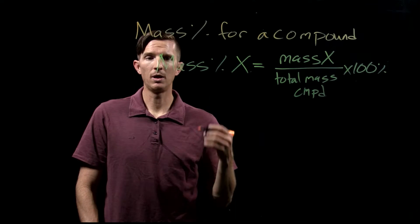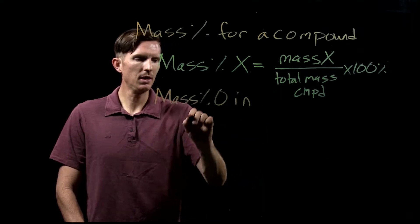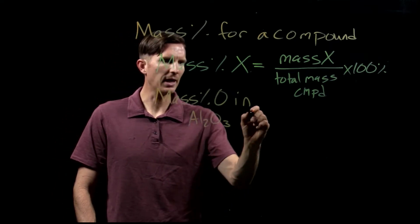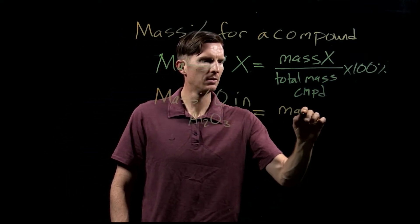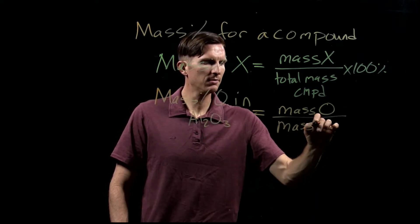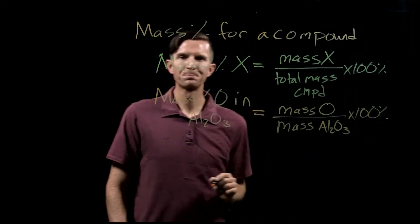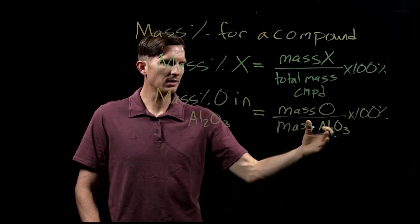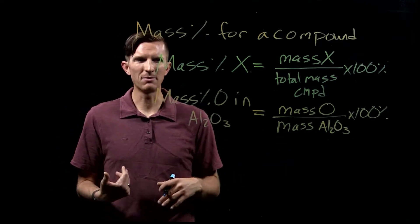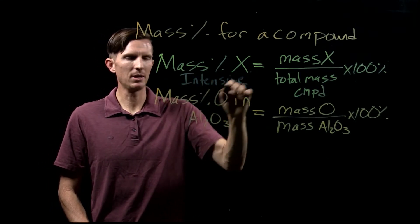If we look at this specifically for a compound, let's say we want to find the mass percent of oxygen in aluminum oxide. To do that we're going to find the mass of oxygen relative to the mass of aluminum oxide, times 100 percent. We need to figure out the mass of oxygen and the mass of aluminum oxide, but we aren't told an amount — we aren't told 100 grams or 1000 grams or 5 grams. That's okay because mass percent is an intensive property.